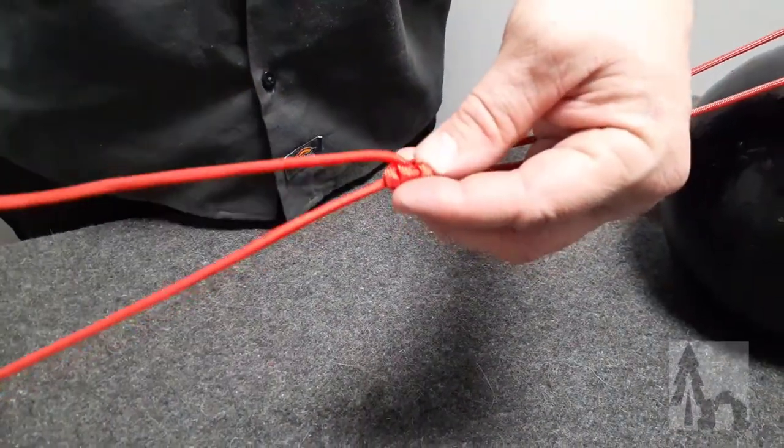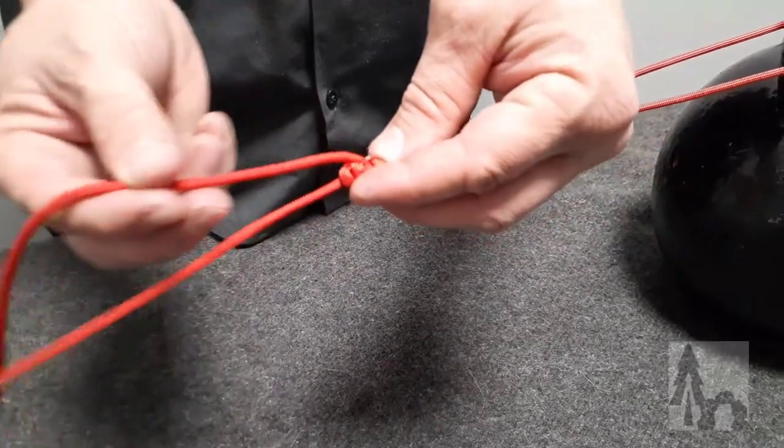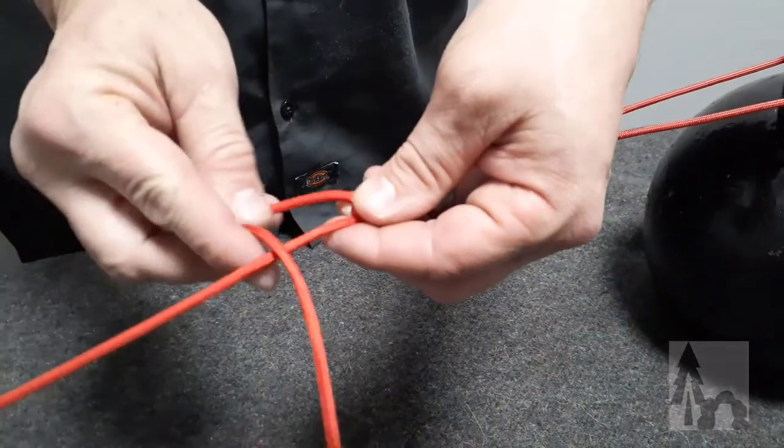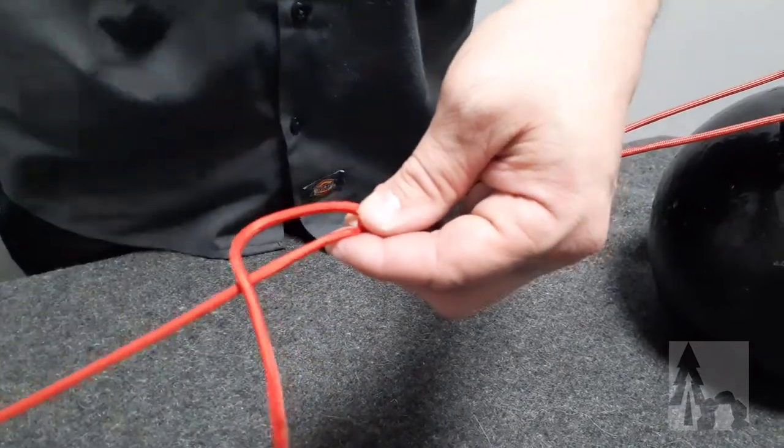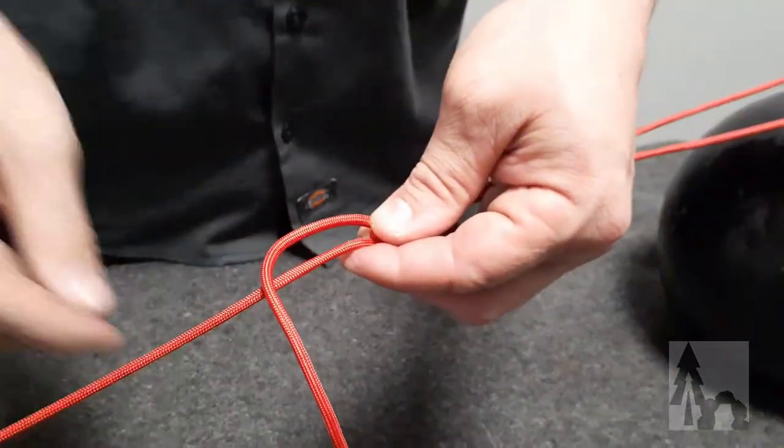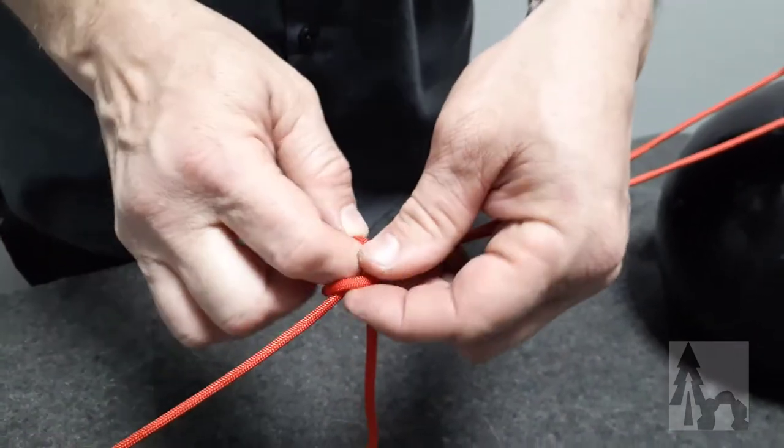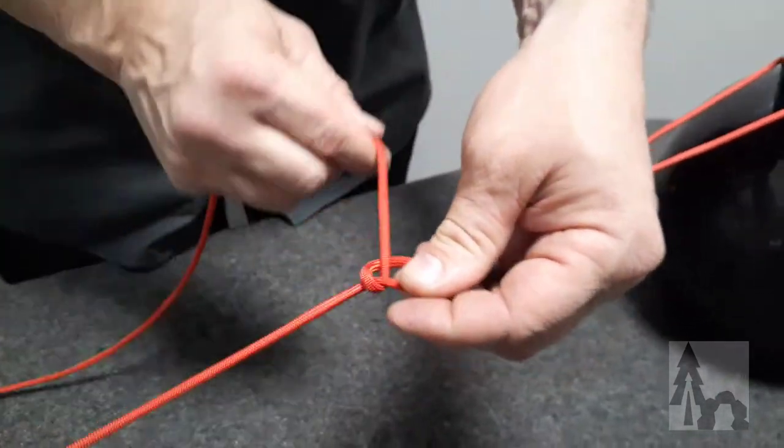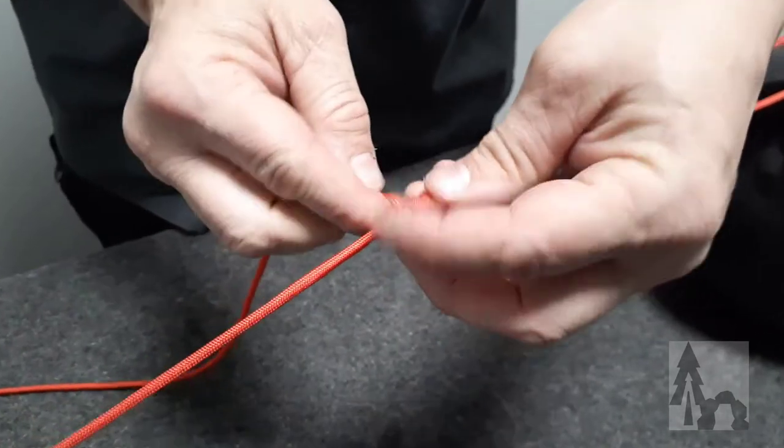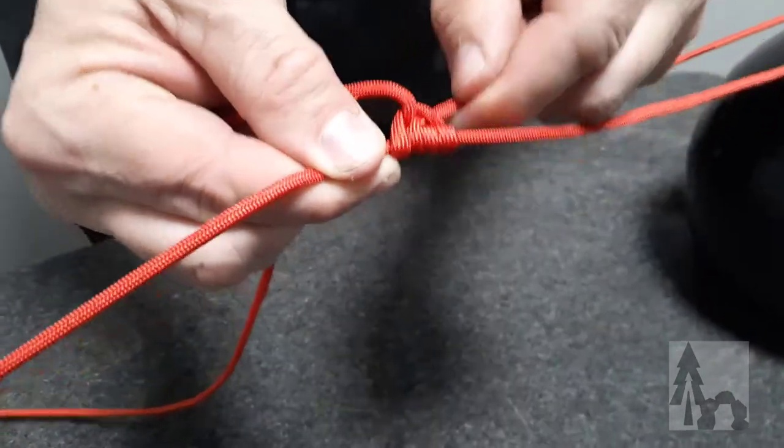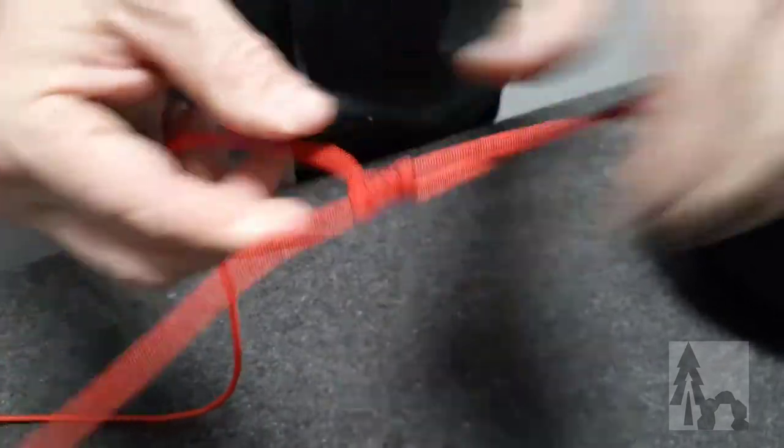Now the working end will come outside of the loop, running back toward the standing end parallel, make a second crossing, and bring the working end up through that new loop. Tighten that down, dress that knot up, try to tighten it up, dress it up.